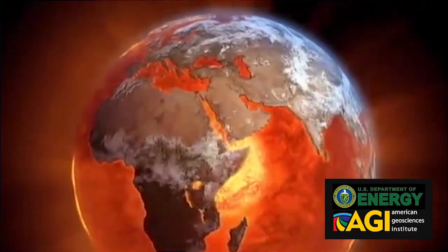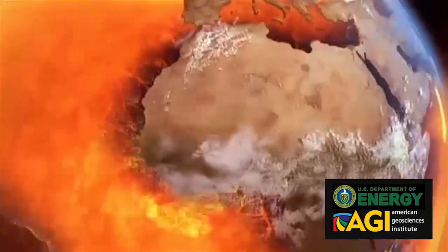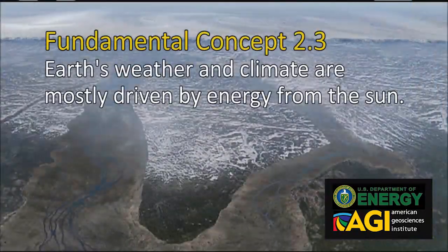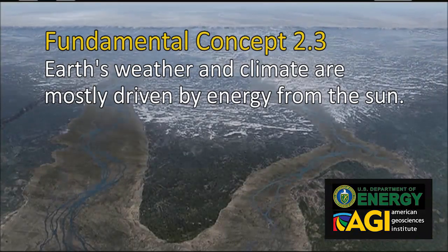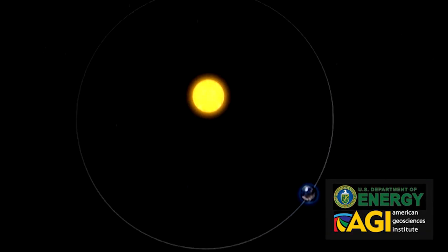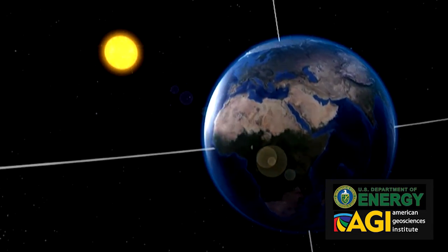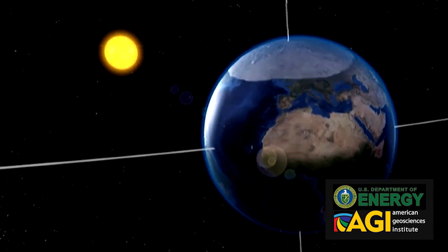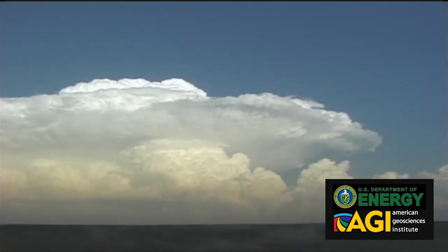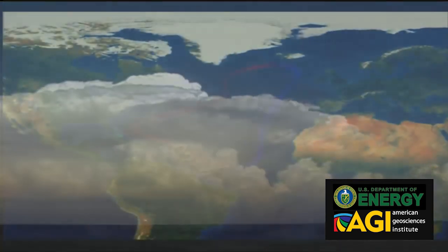Earth's rotation influences the global flow of air and water. Earth's weather and climate are mostly driven by energy from the Sun. For example, unequal warming of Earth's surface and atmosphere by the Sun drives convection within the atmosphere, producing winds and influencing ocean currents.